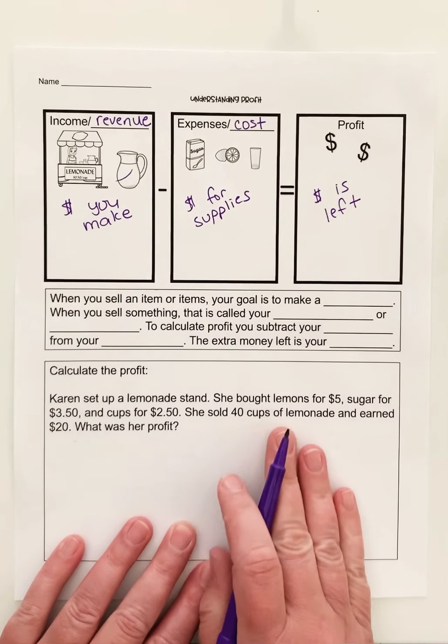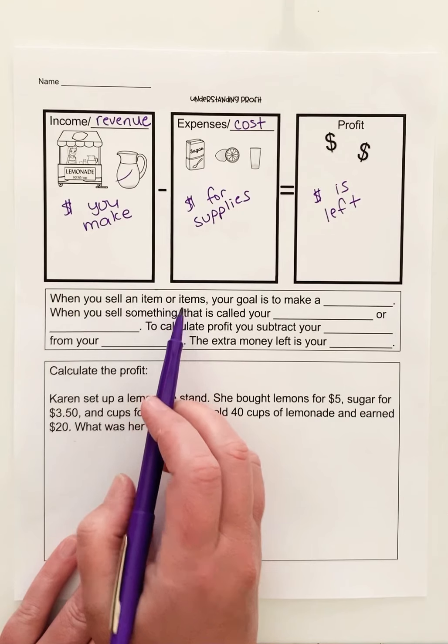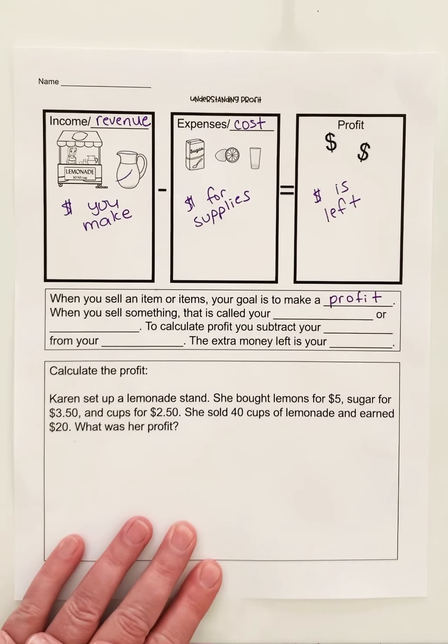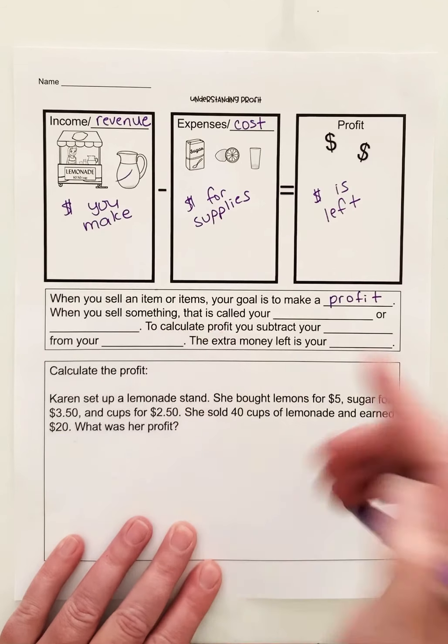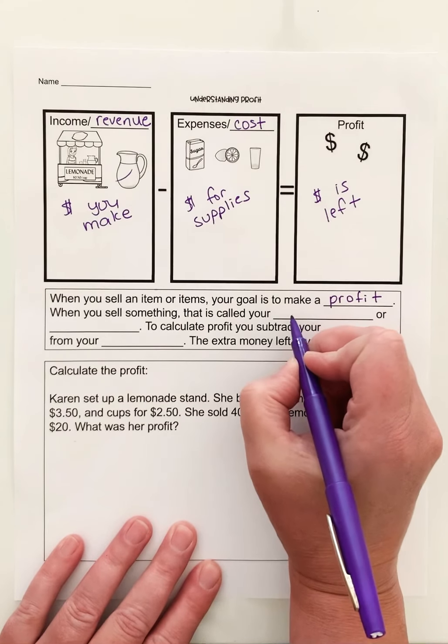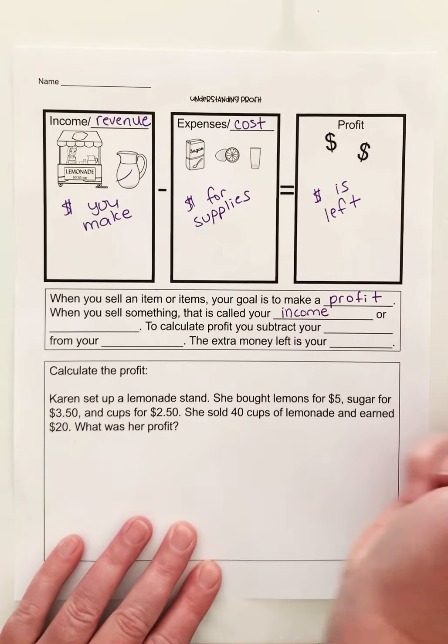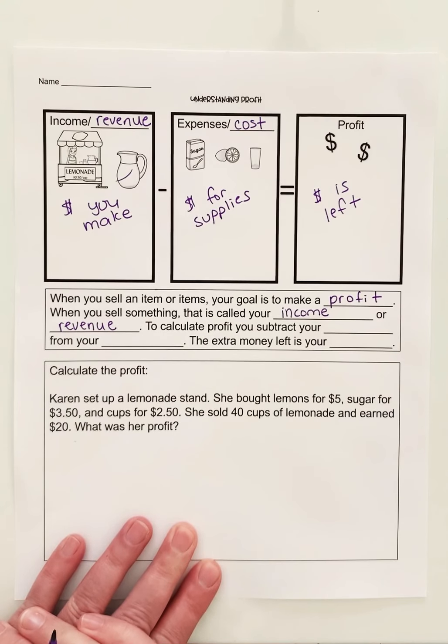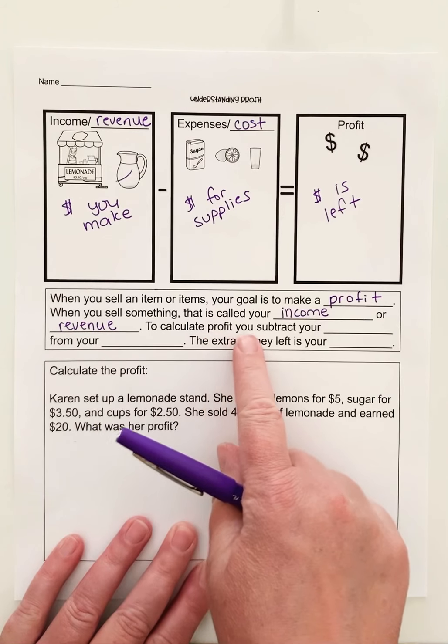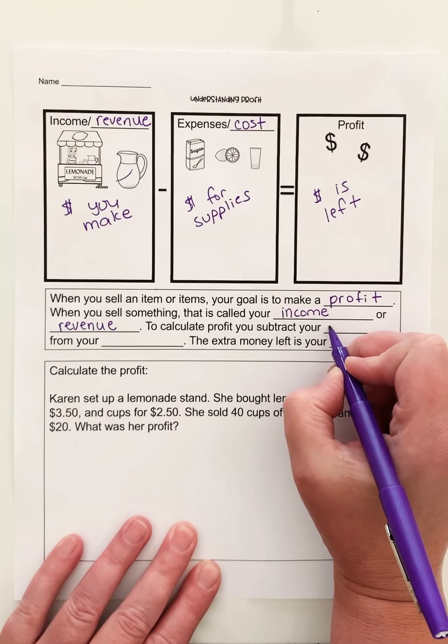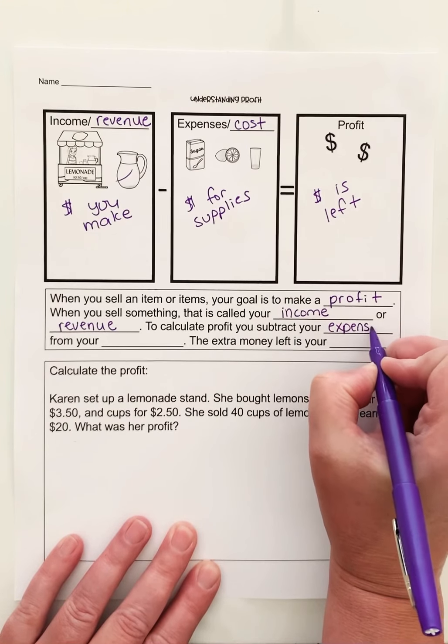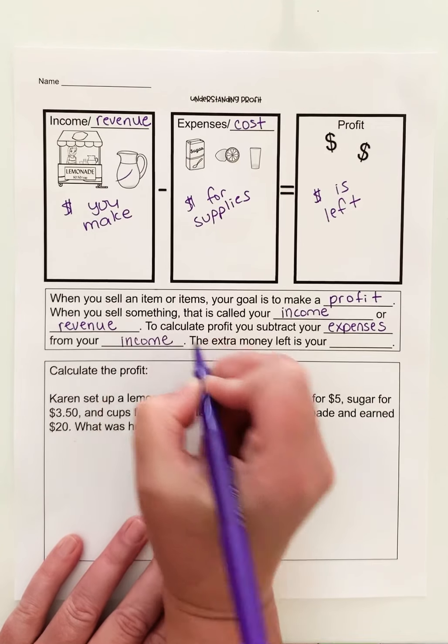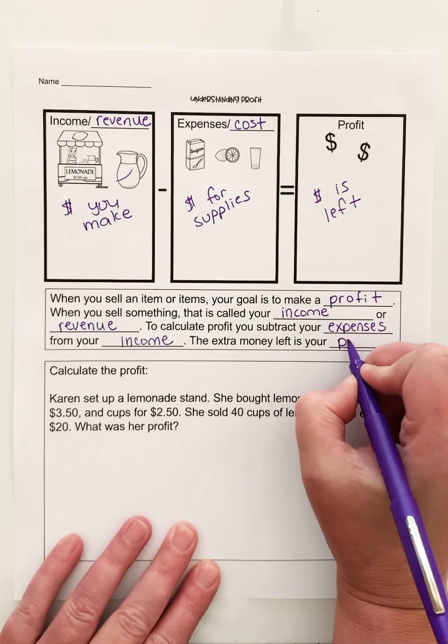So let's walk through this story together. When you sell an item or items, your goal is to make a profit. When you sell something, that is called your income or revenue. To calculate profit, you subtract your cost or expenses from your income. The extra money left is your profit.